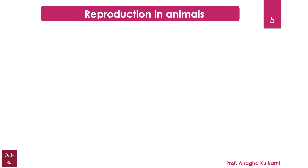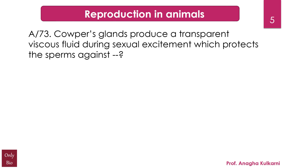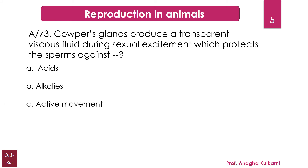The next question relates with the chapter reproduction in animals. Cowper's glands produce a transparent viscous fluid during sexual excitement which protects the sperms against dash. Options are: A. acids, B. alkalis, C. active movement, D. water content.